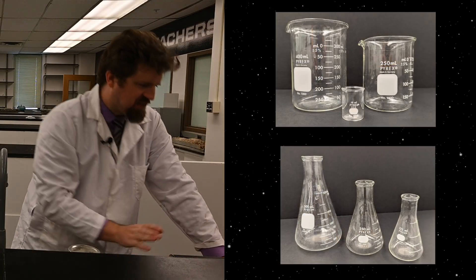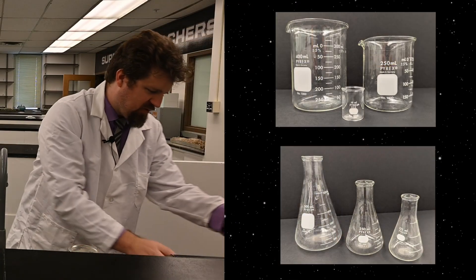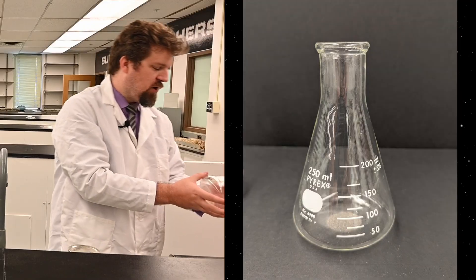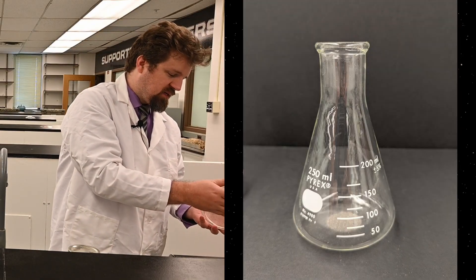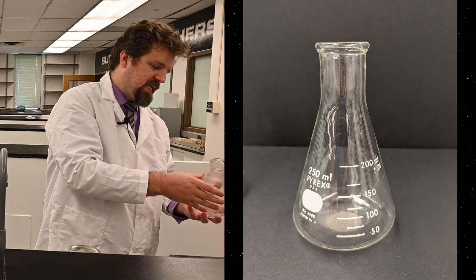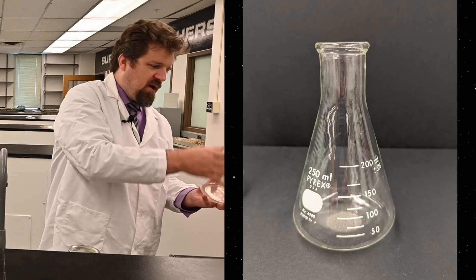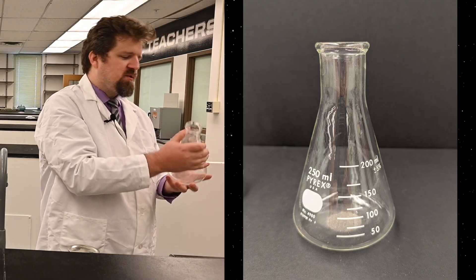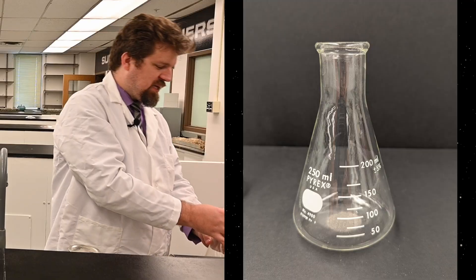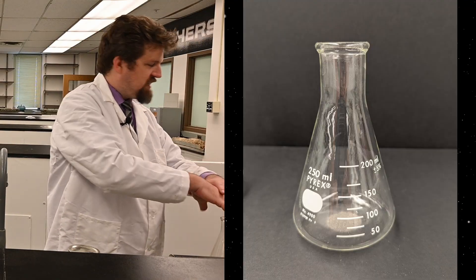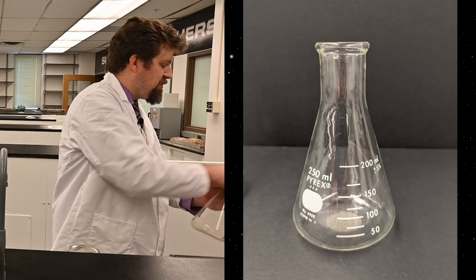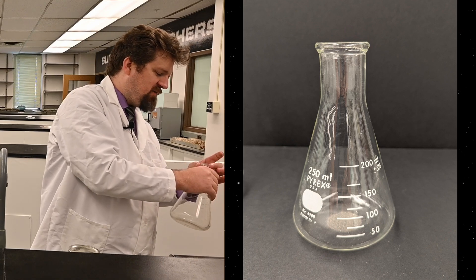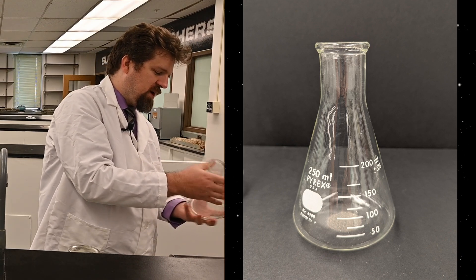The beaker and the flask, in my mind, kind of have similar roles. They just kind of hold stuff. Notice that the flask, this is specifically called an Erlenmeyer flask, probably the only one you're going to see, has a wide bottom and a skinny top and is used to hold liquids or solids. What's nice about this is because it has a skinny top, you're less likely to have things drop into it. You can also put a stopper in the top and make it a little bit more secure.